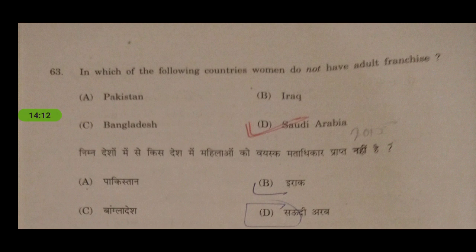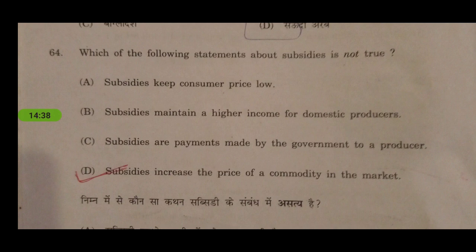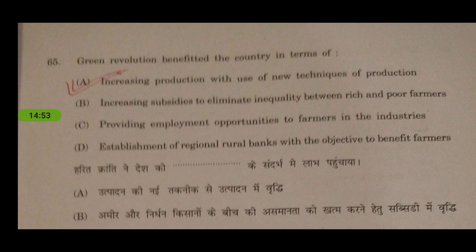Saudi Arabia is the last country where women could not vote, though now they can. Which of the following statements about subsidies is not true? The fourth one — large subsidies increase the price of commodities in the market — is wrong, while all others are true. Green Revolution benefited the country in terms of increasing production using new techniques — introducing fertilizers, herbicides, pesticides, and high-yielding seed varieties, which increased production of wheat and rice. Government uses trade barriers to protect domestic producers from foreign competition.